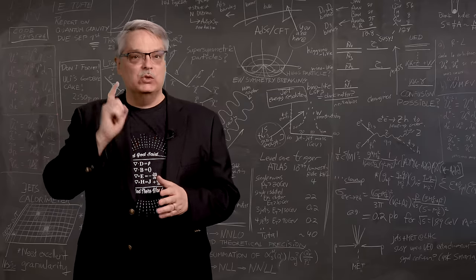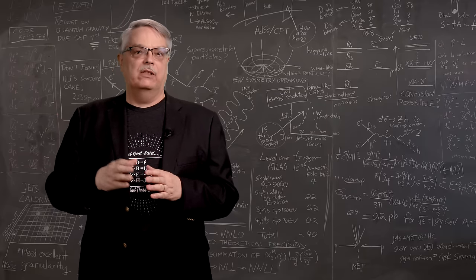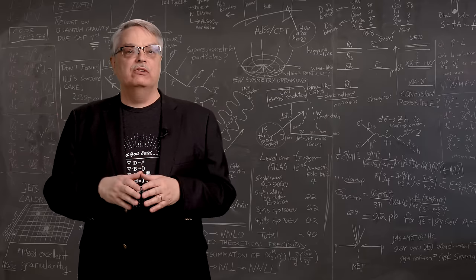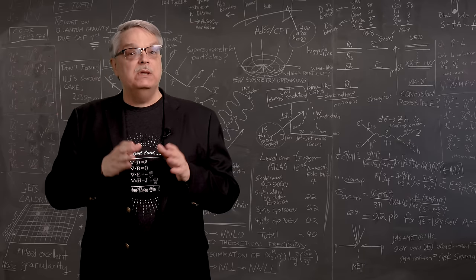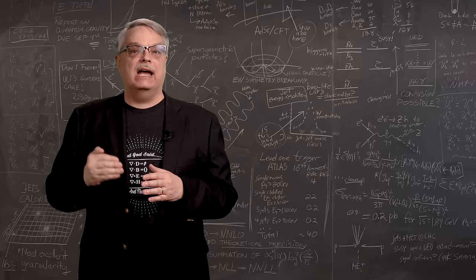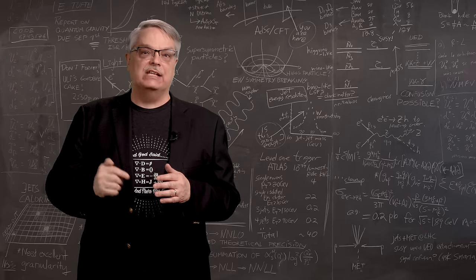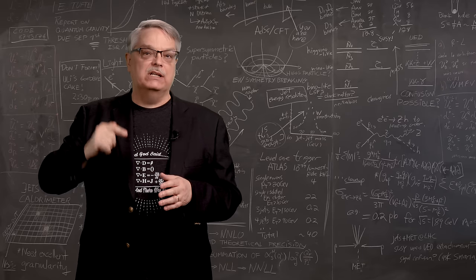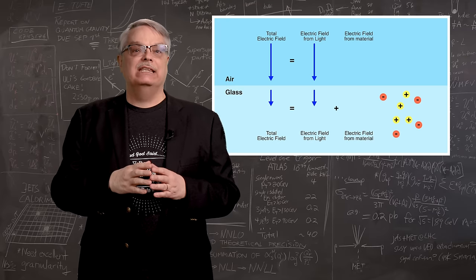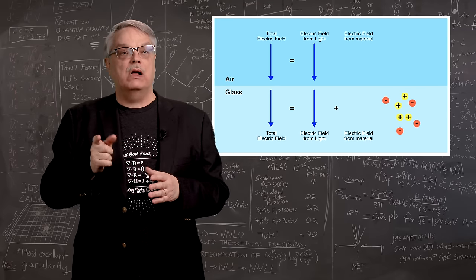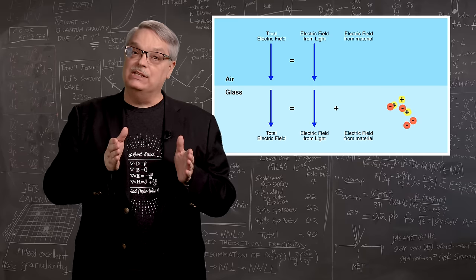And that, my friends, is why light bends when it goes from air to glass. It's not because of many of the ordinary explanations. It's because of how light interacts with glass and changes the glass's properties. And it's because the electric field inside the glass is affected by the arrangements of atoms and molecules in the glass when light hits it.